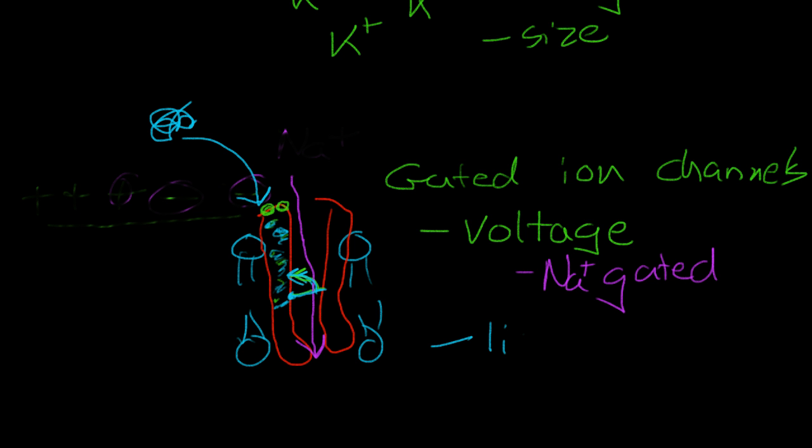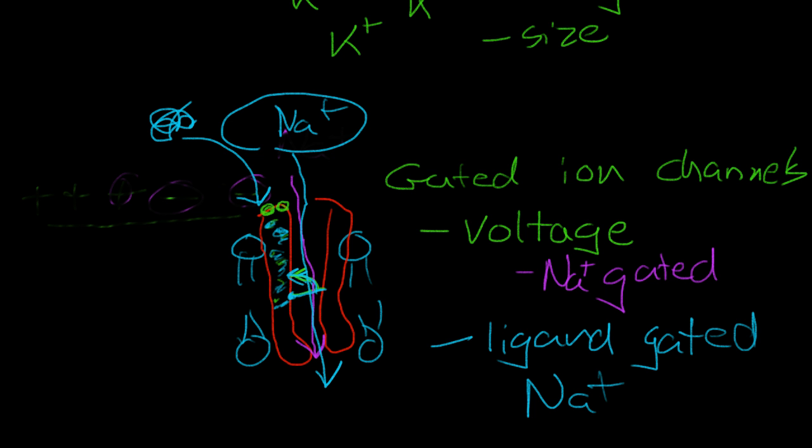This allows a chemical, an ion to pass through. An example of this is a ligand-gated sodium channel that we have in our nervous system in the synapses of nerves. This is a ligand-gated sodium channel.